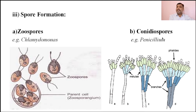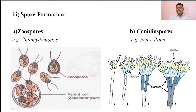The second type is conidiospores. An example is Penicillium — a number of fungi reproduce asexually by means of conidiospore production. The difference between zoospores and conidiospores is that zoospores are motile while conidiospores are non-motile; they cannot move from one position to another. Conidiospores are produced on special branches in Penicillium. The circular structures at the tip of this diagram are the conidiospores, which are non-motile.